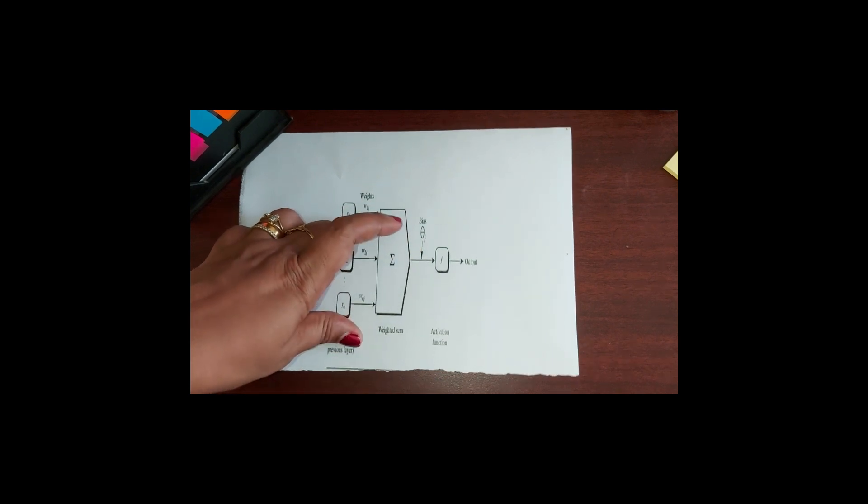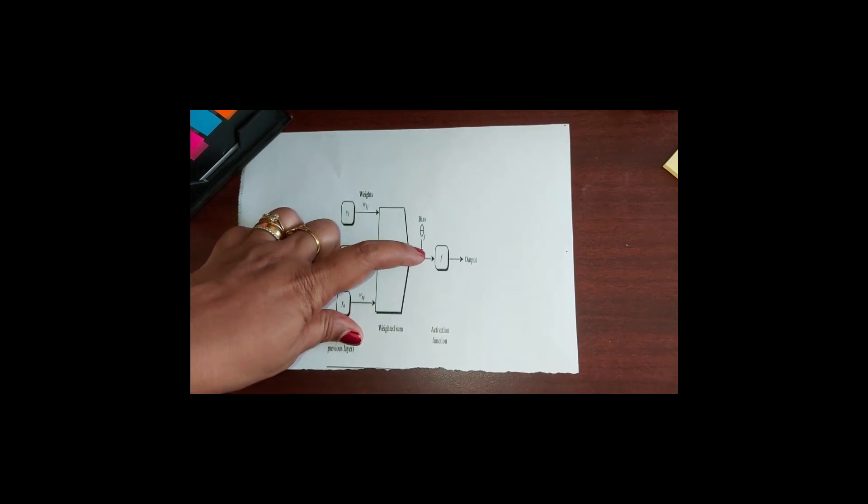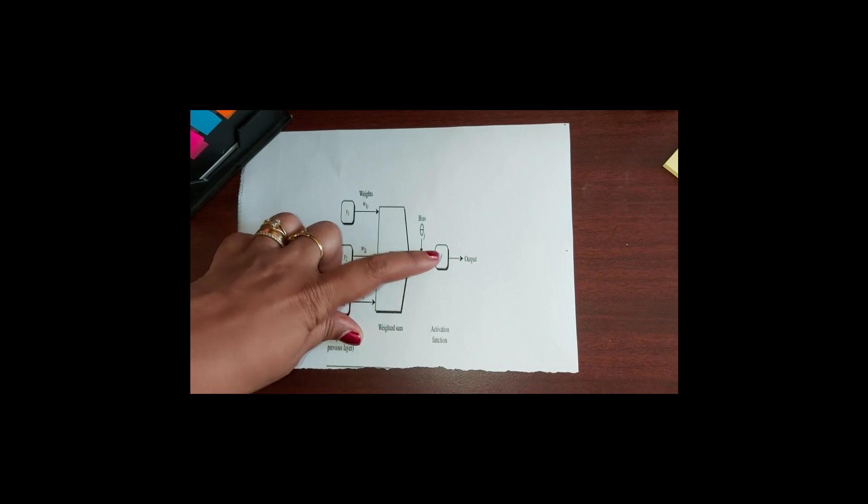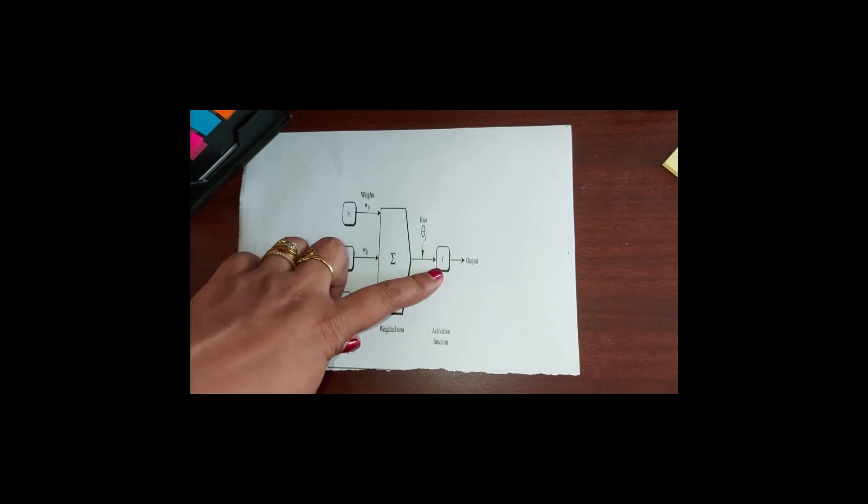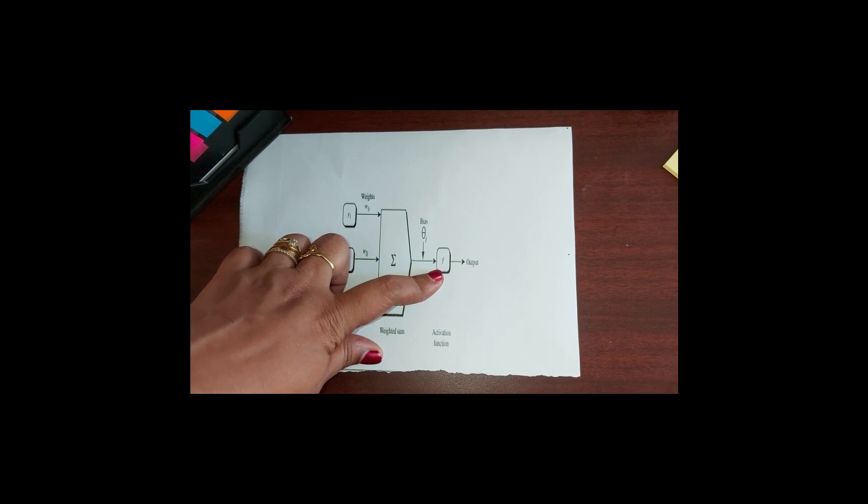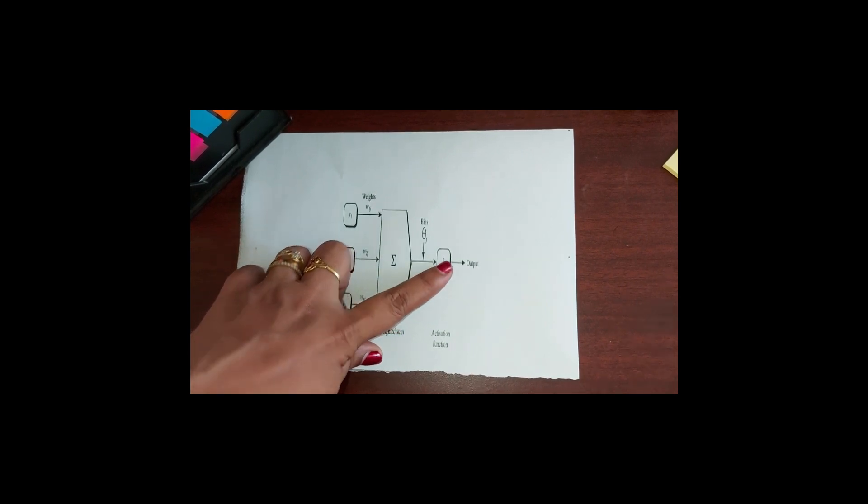There will be a bias which will be associated with unit j. And a non-linear activation function f is applied to a net input. Thereafter, you will be getting the output.